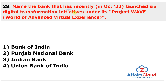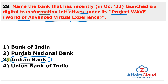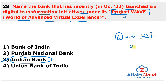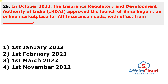Next question: which bank recently launched six digital transformation initiatives under its Project WAVE? The answer is Indian Bank. Indian Bank, a public sector bank, launched six digital transformative initiatives under Project WAVE — World of Advanced Virtual Experience. Indian Bank tied up with Universal Sompo General Insurance for providing online two-wheeler, three-wheeler, and health insurance through its mobile banking application known as IND OASIS, enabling customers to buy general insurance products digitally anytime, anywhere.